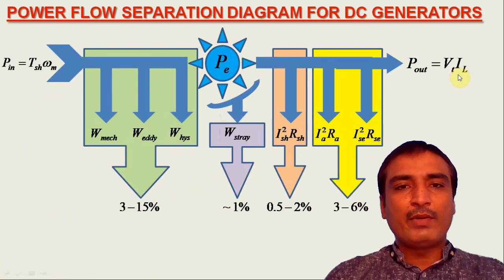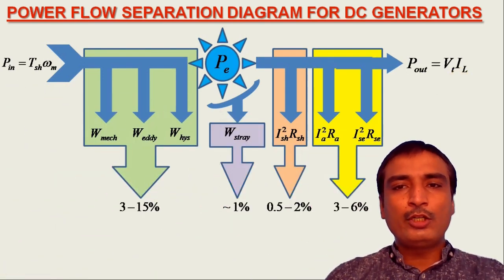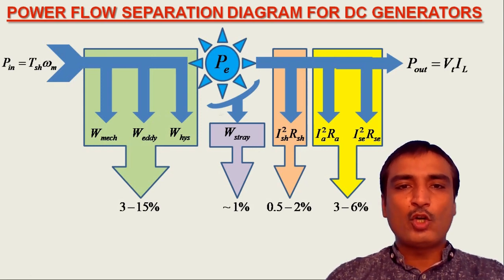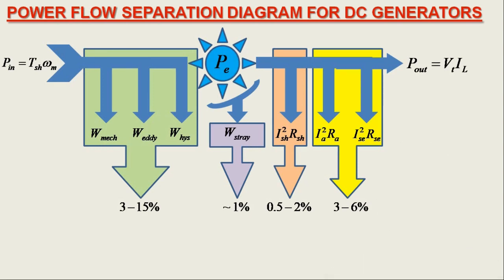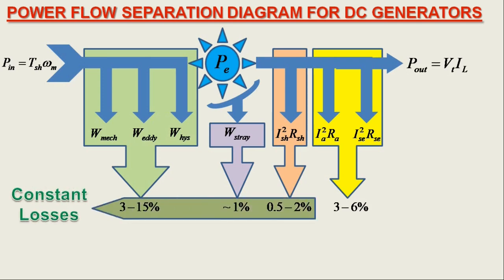It is worth noting that mechanical losses, eddy current loss, hysteresis loss and shunt field winding copper loss always occur in the DC generator irrespective of load conditions, hence remain constant. These losses together are called constant losses.